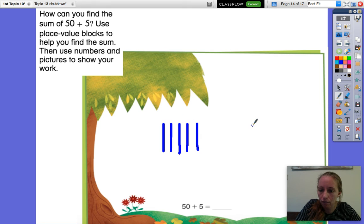Now I want to add 5 more. 1, 2, 3, 4, 5. If I were to count up all of these blocks together, I would have 10, 20, 30, 40, 50, 51, 52, 53, 54, 55. And our sum would be 55.